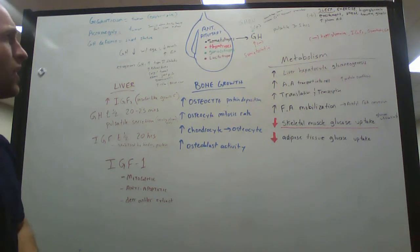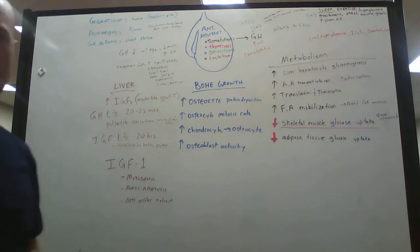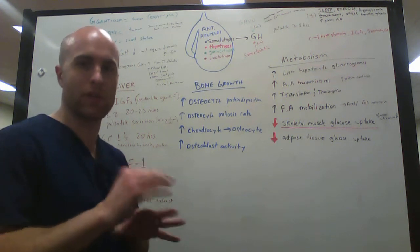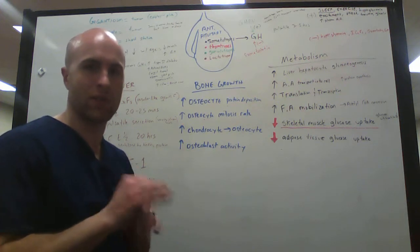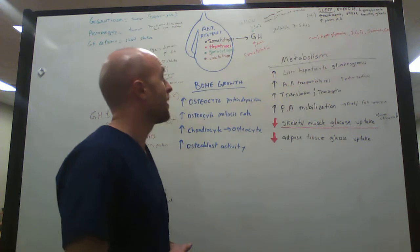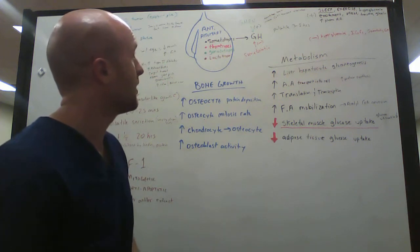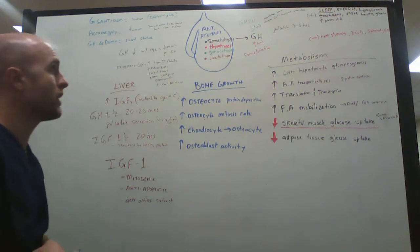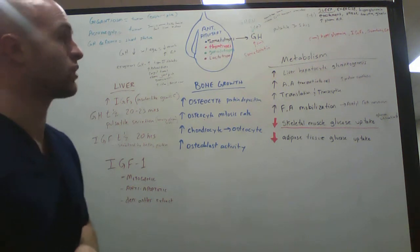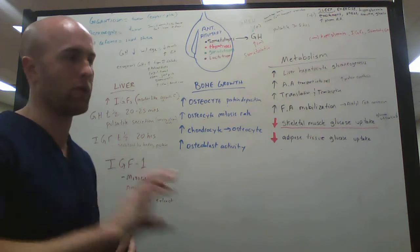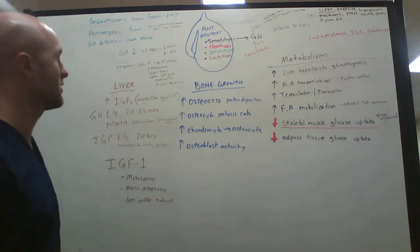The release of growth hormone is pulsatile, which means it's not just constantly secreting. It'll wait three to five hours, then release a bunch, stop for three to five hours, then release a bunch. So the plasma levels are maybe not always consistent. When growth hormone-releasing hormone binds to a somatotrope, it increases calcium transport, which causes exocytosis of the vesicles containing growth hormone.